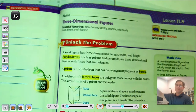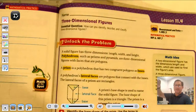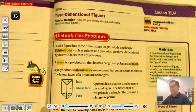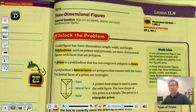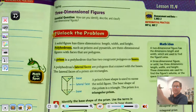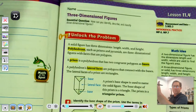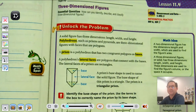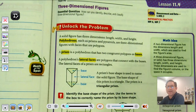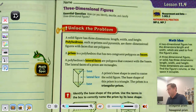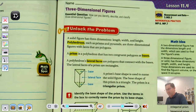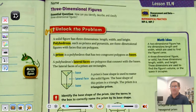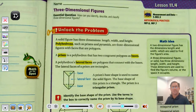Hello, everybody. So today we're going to talk about three-dimensional figures. We're in lesson 11.4, and our essential question is: how can you identify, describe, and classify three-dimensional figures? We're on page 477 of the 5th grade GoMath textbook.